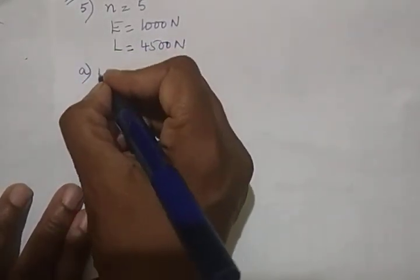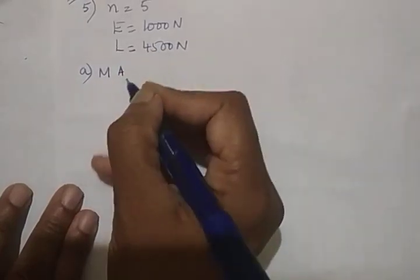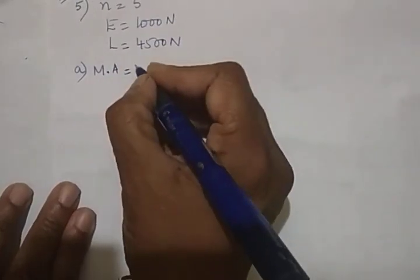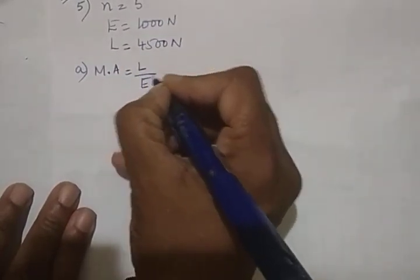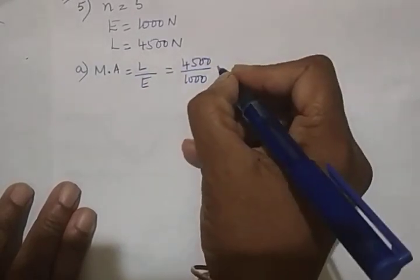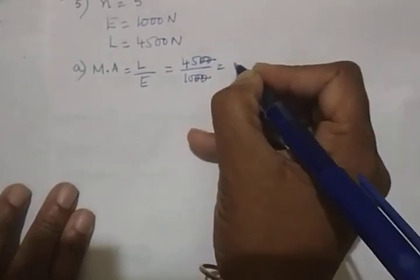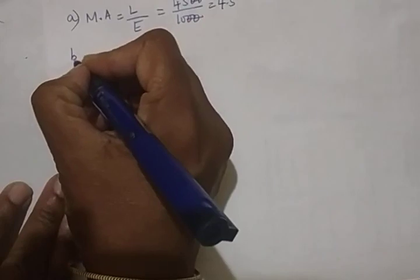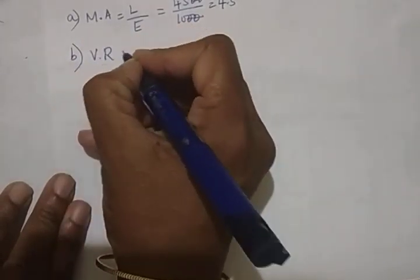What all you have to find? Mechanical advantage, velocity ratio and efficiency. So what is the formula for MA? Load upon effort that will be 4500 upon 1000. That will be 45 by 10. That is 4.5.